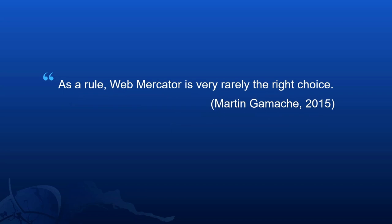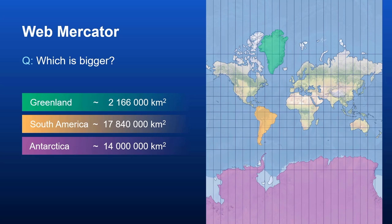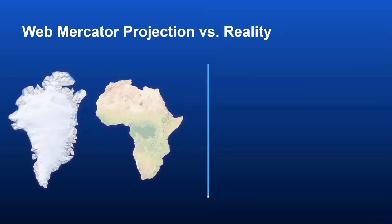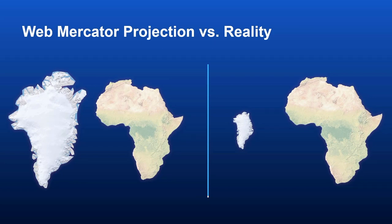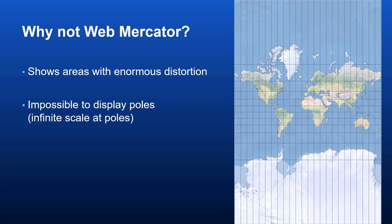The problem is that Web Mercator is very rarely the right choice. For example, let's compare areas of three landmasses. On the map, Greenland is bigger than South America and Antarctica appears to be a huge continent. But in reality, South America is bigger than Antarctica and more than eight times bigger than Greenland. In Mercator projection, Greenland and Africa look roughly the same size, but in fact Africa is about 14 times bigger than Greenland. Web Mercator has huge area distortion the further away from the equator you go, and therefore it is not appropriate to render spatial analysis or display its results. It also cannot display the poles — they are projected to infinity.